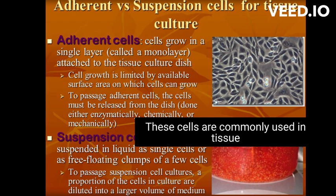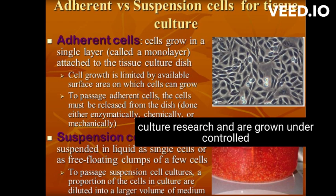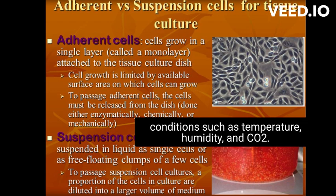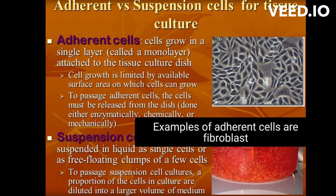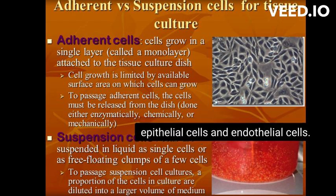These cells are commonly used in tissue culture research and are grown under controlled conditions such as temperature, humidity, and CO2. Examples of adherent cells are fibroblasts, epithelial cells, and endothelial cells.